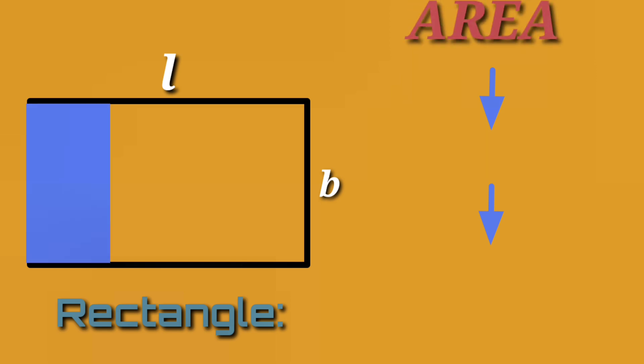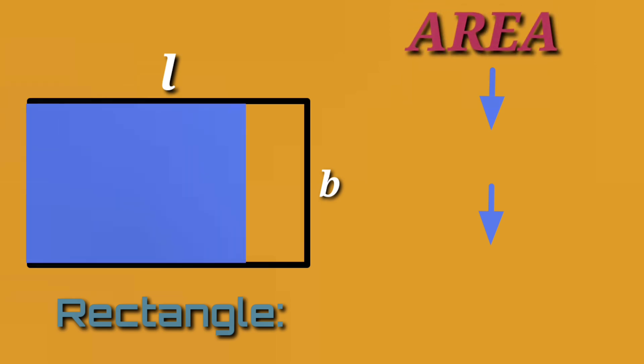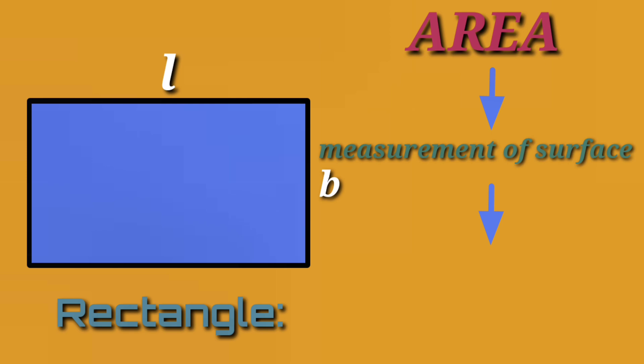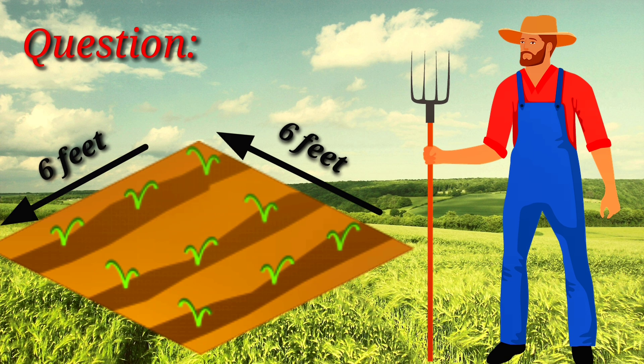The area of the rectangle is the inner space inside the rectangle, but not its boundary — jo space us ke andar hoti hai. The formula for the area of a rectangle is length multiplied by breadth.